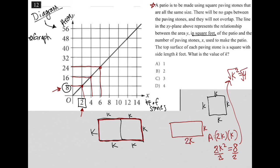I can then square root both sides, and therefore k must equal two. So the correct answer here must be choice B.